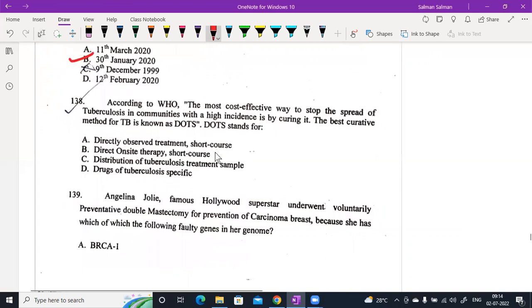According to WHO, the cost effective way to reduce the spread of tuberculosis in communities with high incidence is by curing it. The best curative method for TB is known as DOTS. DOTS stands for directly observed treatment, option A.